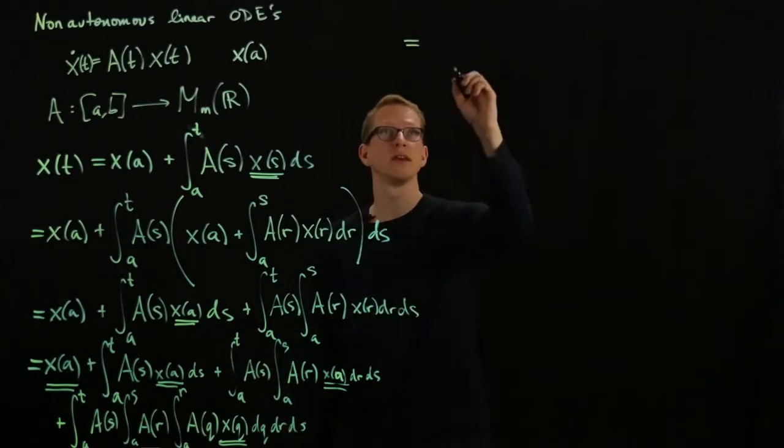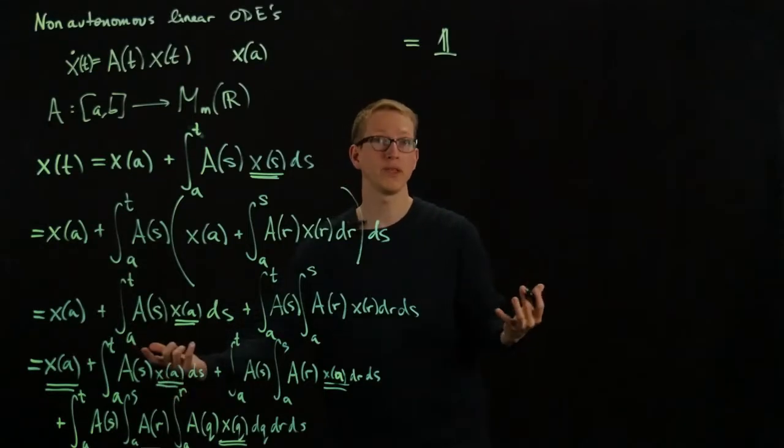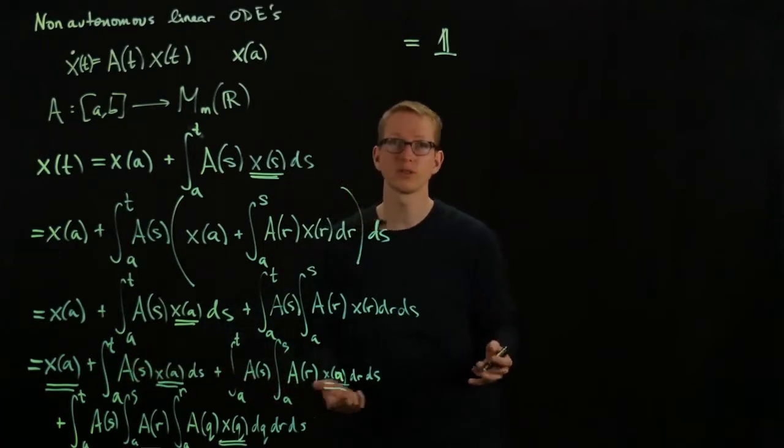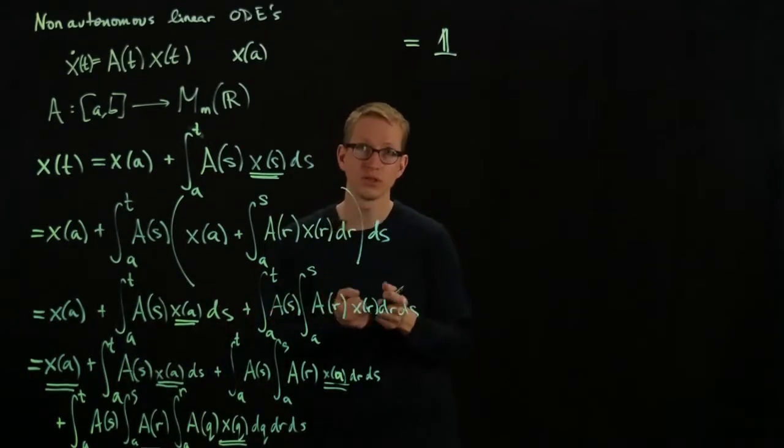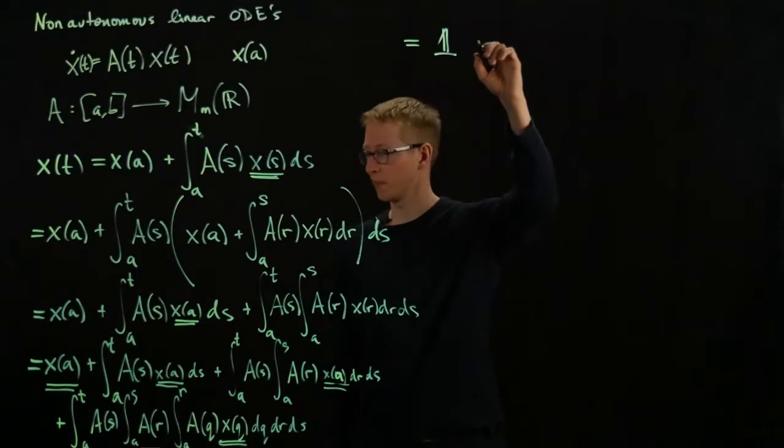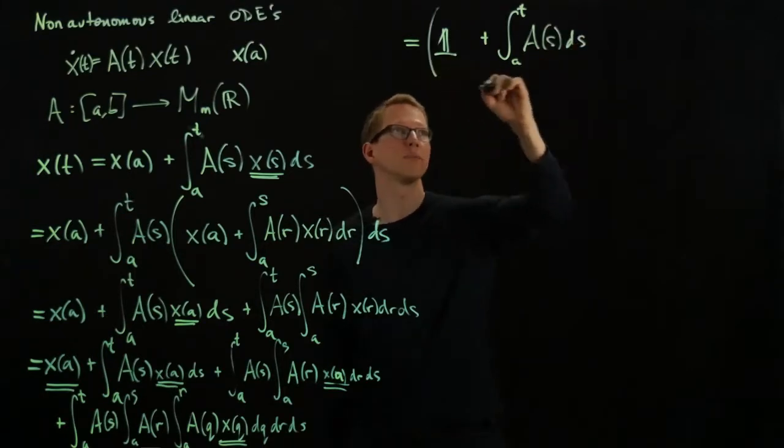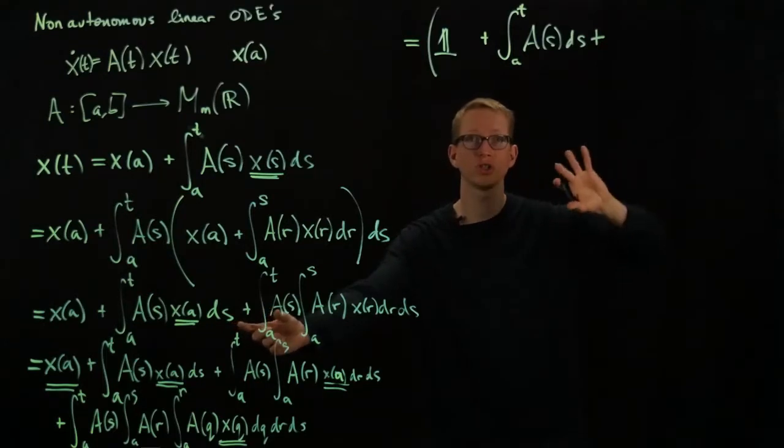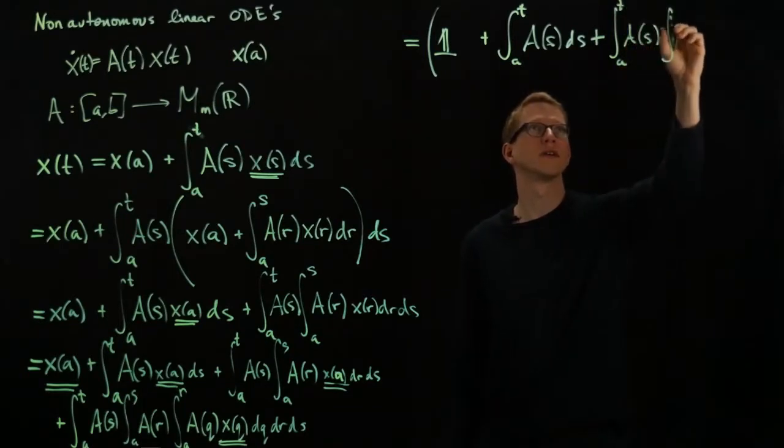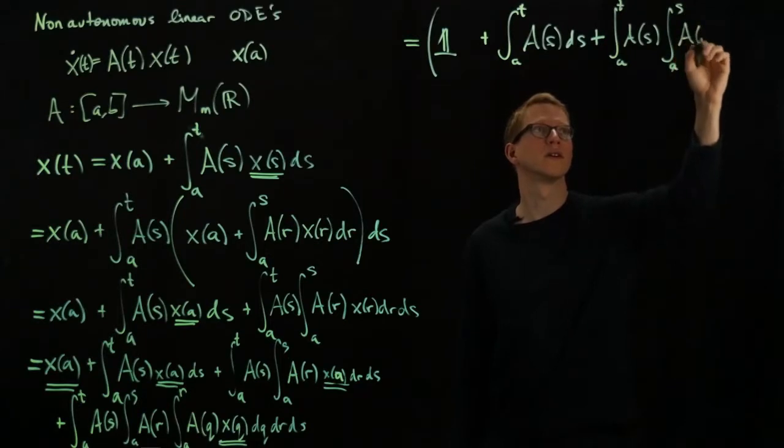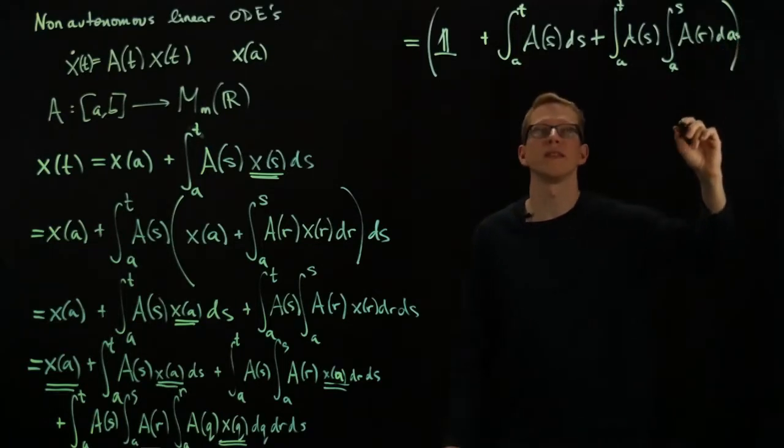So let me rewrite this as the identity plus everything here, since x(a) doesn't depend on s, I can pull that out of the integral. But I have to remember that this is an integral of a matrix. And by the way, the integral of a matrix just means the integral of each of its components. I should have mentioned that earlier, but it's not a complicated definition. You just integrate each component in the usual way. Plus integral from a to t, a(s), ds, plus.